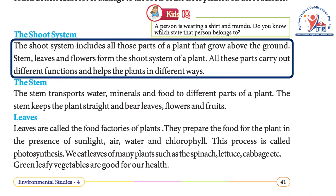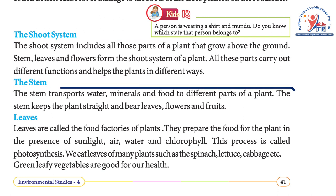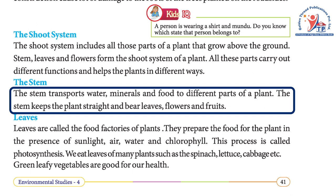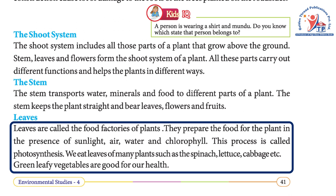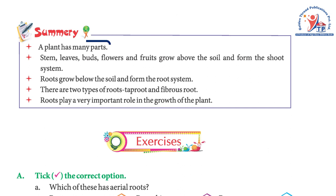The shoot system includes all those parts of a plant that grow above the ground. Stem, leaves, and flowers form the shoot system. The stem transports water, minerals, and food to different parts of a plant and keeps the plant straight, bearing leaves, flowers, and fruits. Leaves are called the food factories of plants. They prepare food for the plant in the presence of sunlight, air, water, and chlorophyll — a process called photosynthesis. We eat the leaves of many plants such as spinach, lettuce, and cabbage. Green leafy vegetables are good for our health.